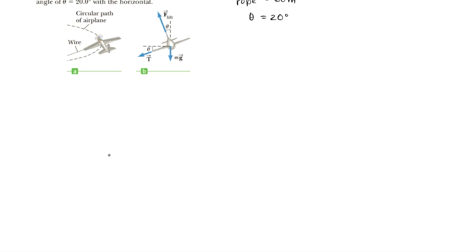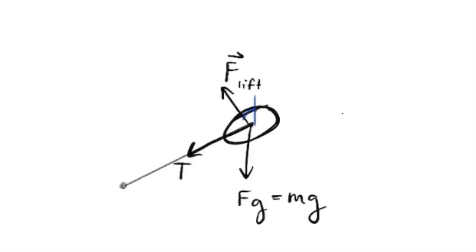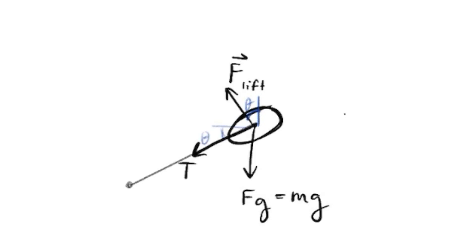Next up, we can draw a free body diagram. This is the center point, here's the wire, and here's the airplane. First, there's force of gravity going downwards, and the force of lift. We're just going to copy the free body diagram from above — force of lift, force of tension pulling in this direction. We can break this down using Newton's second law. This angle equals theta and this angle equals theta.